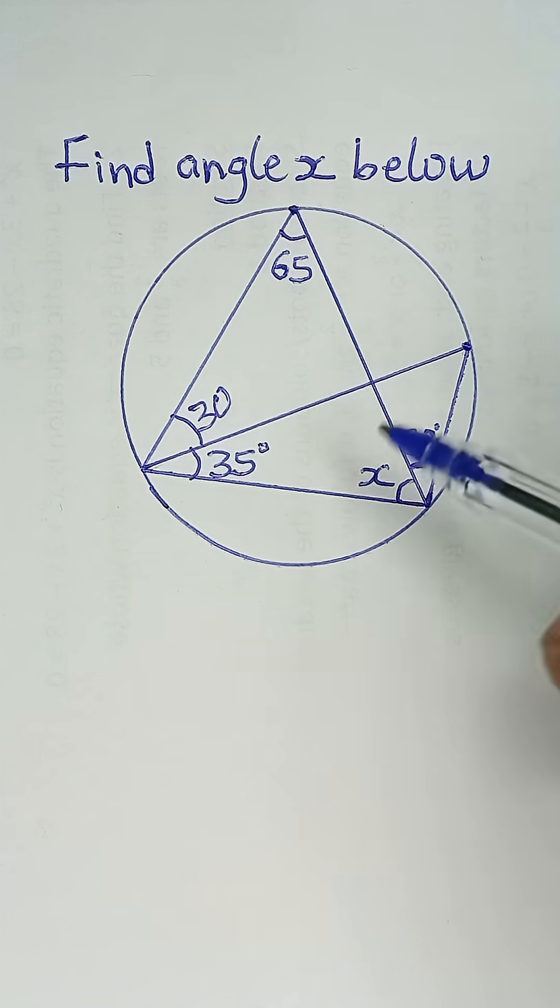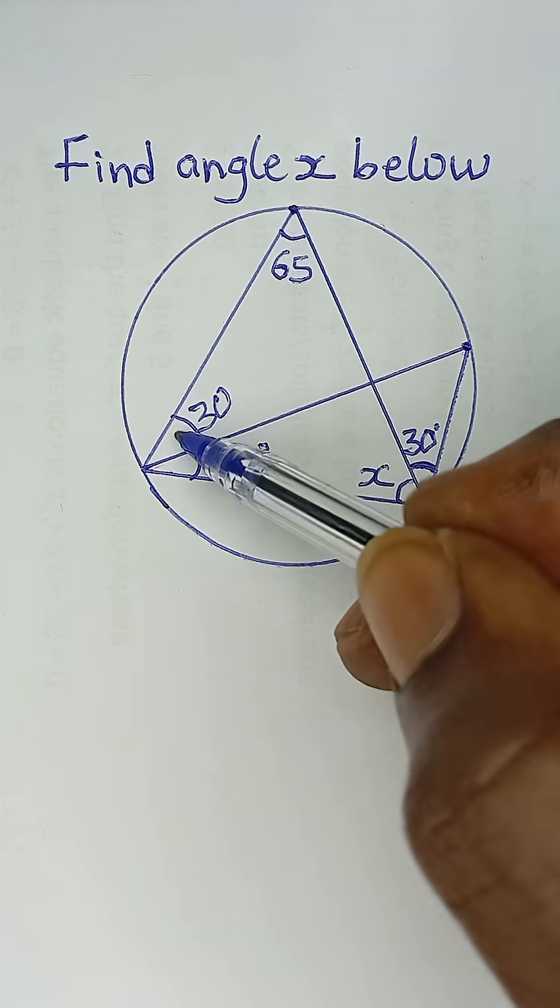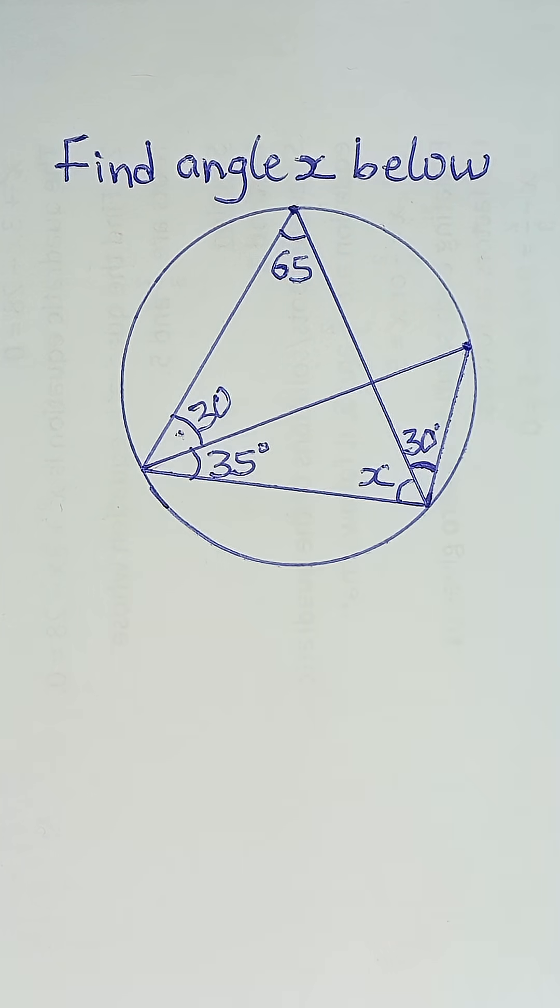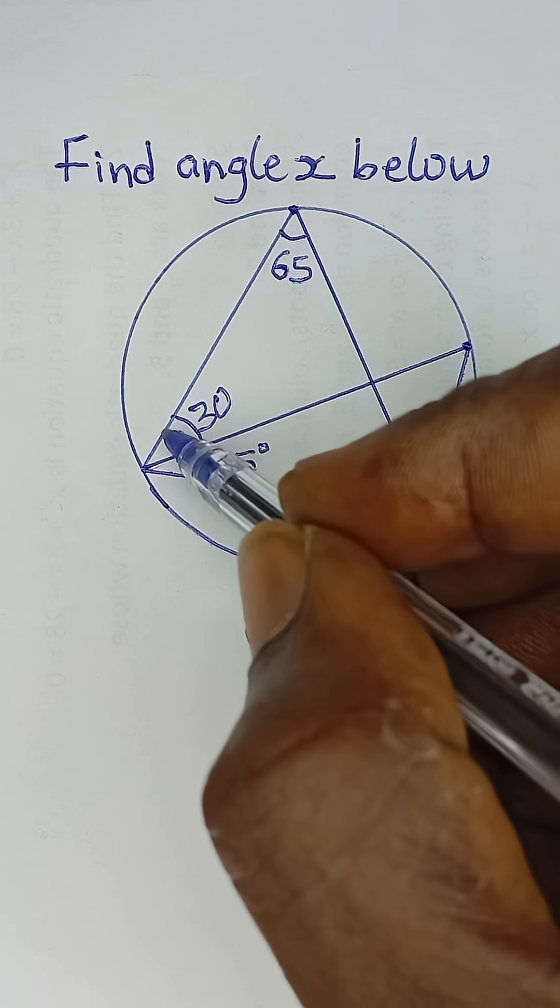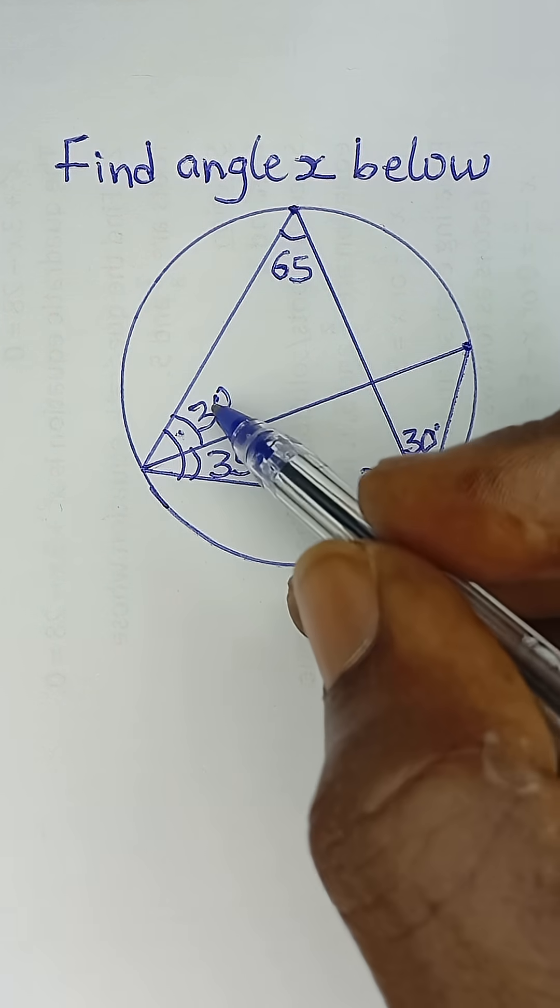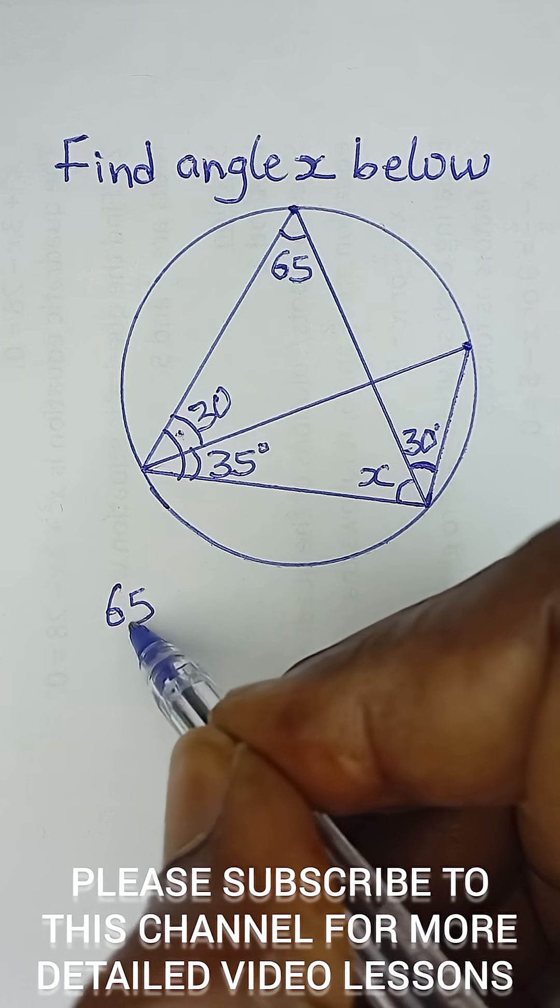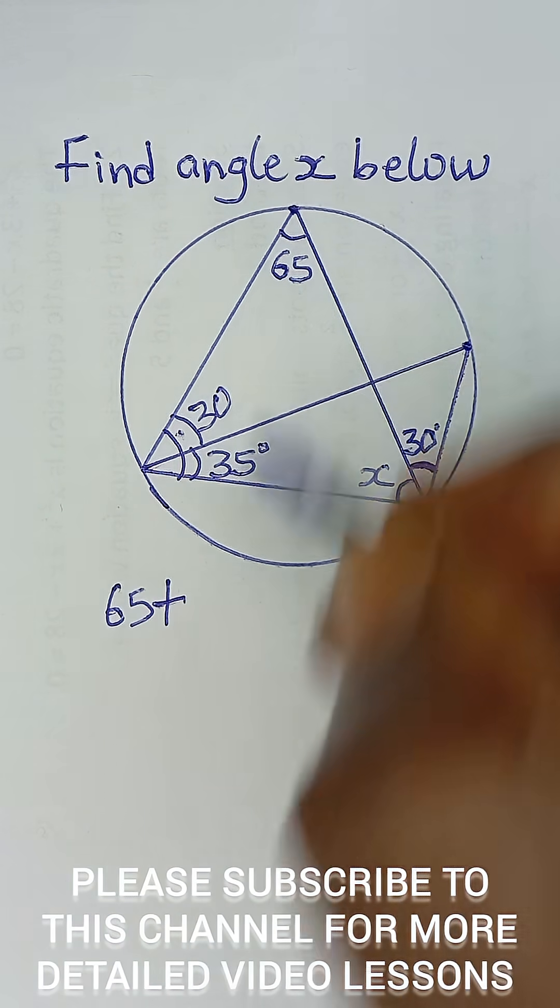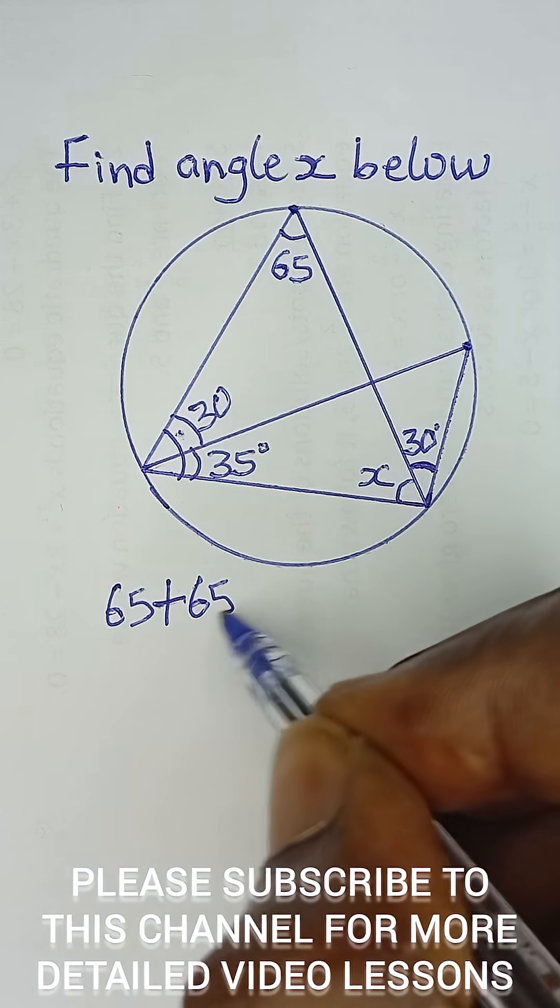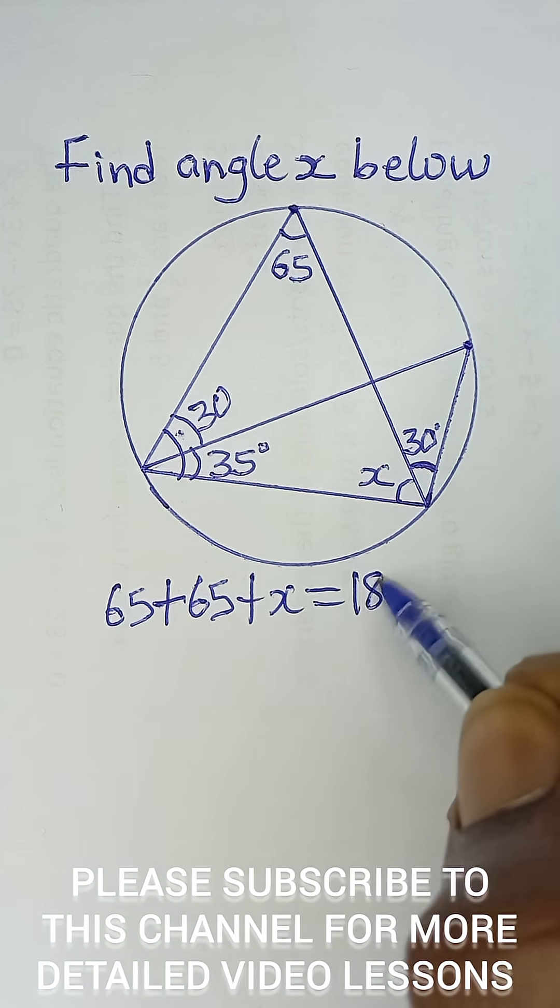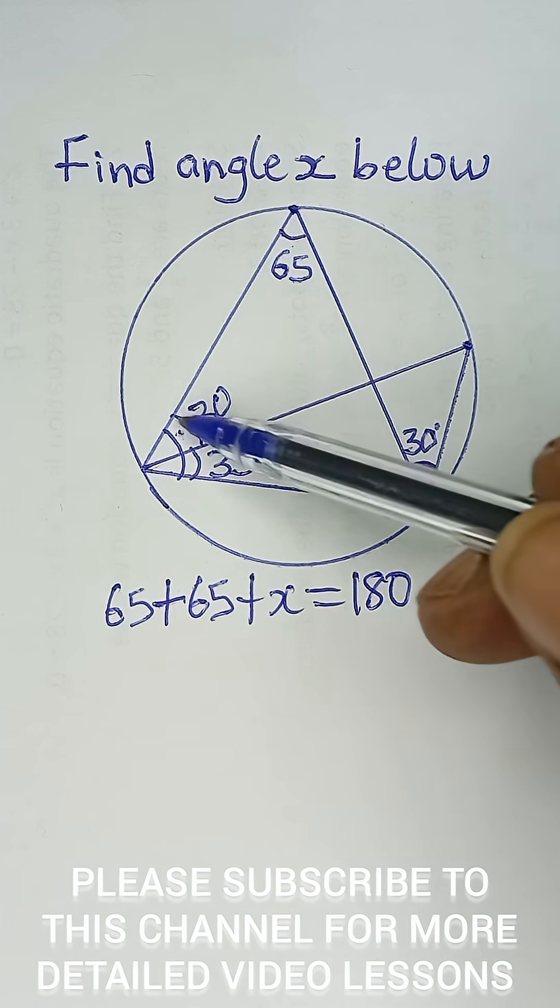Why? Because angles in the same segments are equal. So this is 30, this is also 30. Now this total angle here will be 30 plus 35, which is 65. And then plus 65 again, and then plus x should equal 180. Why? Because the sum of angles in a triangle is 180 degrees.